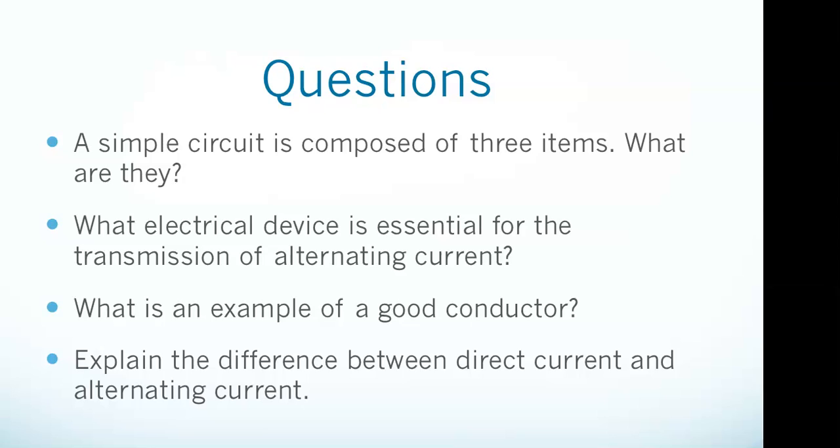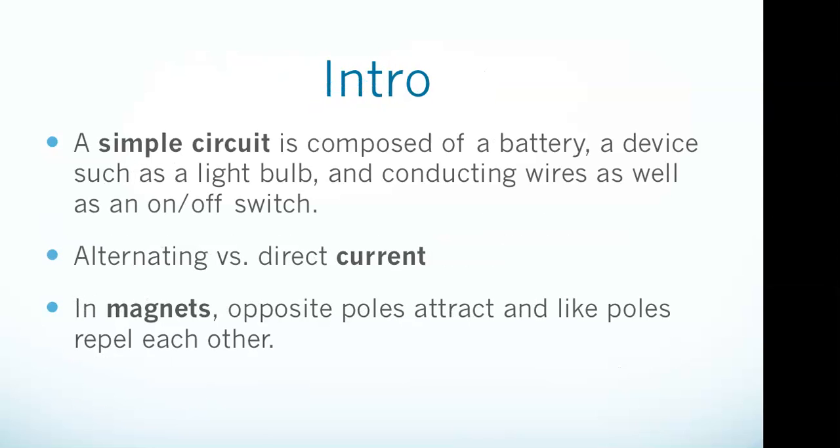Simple circuit composed of three items - what are they? What electrical device is essential for the transmission of alternating current? What is an example of a good conductor? Explain the difference between direct current and alternating current. Okay, a couple current questions.